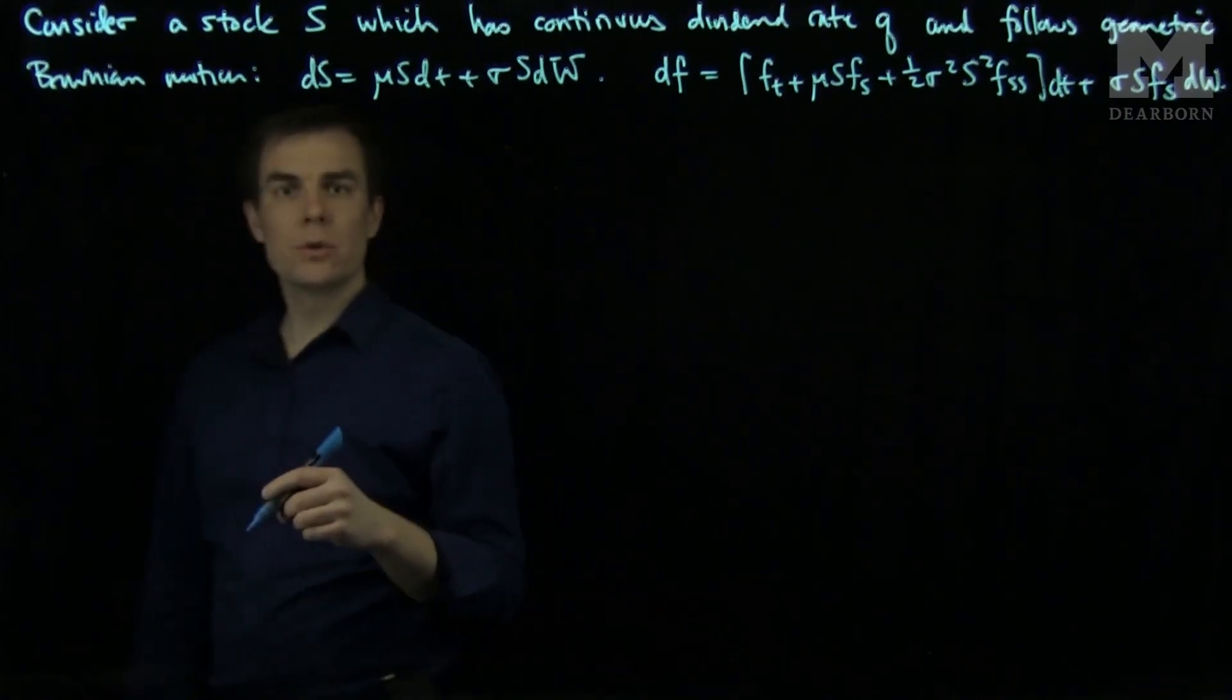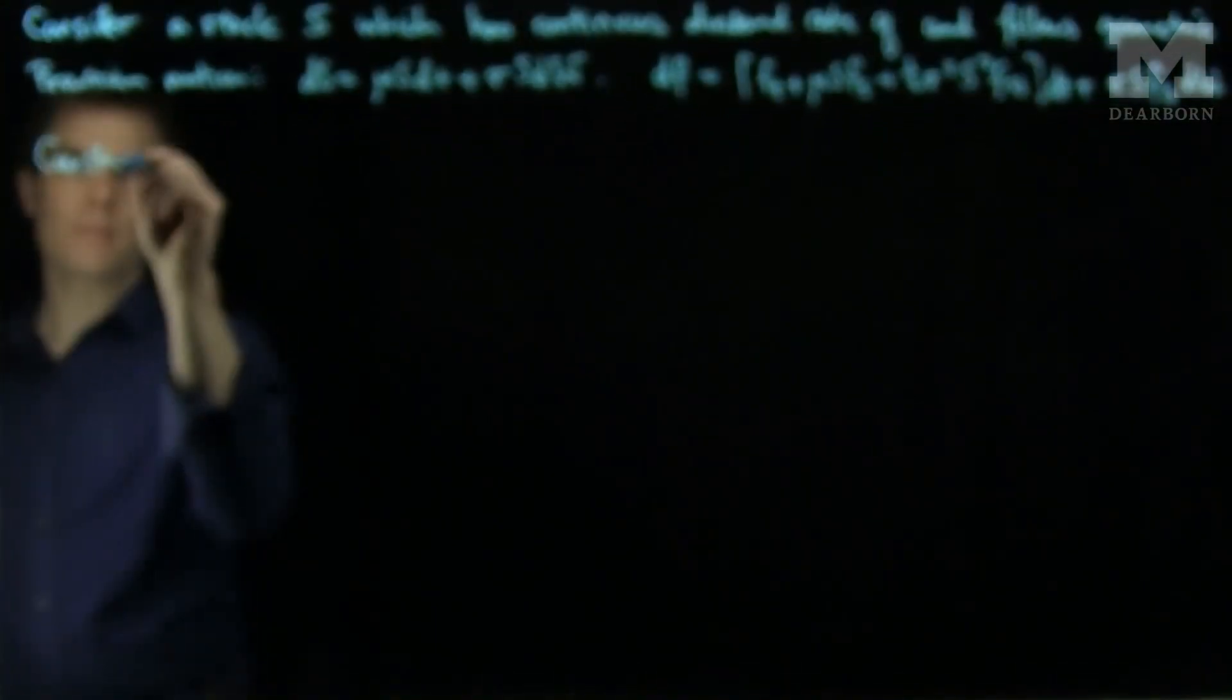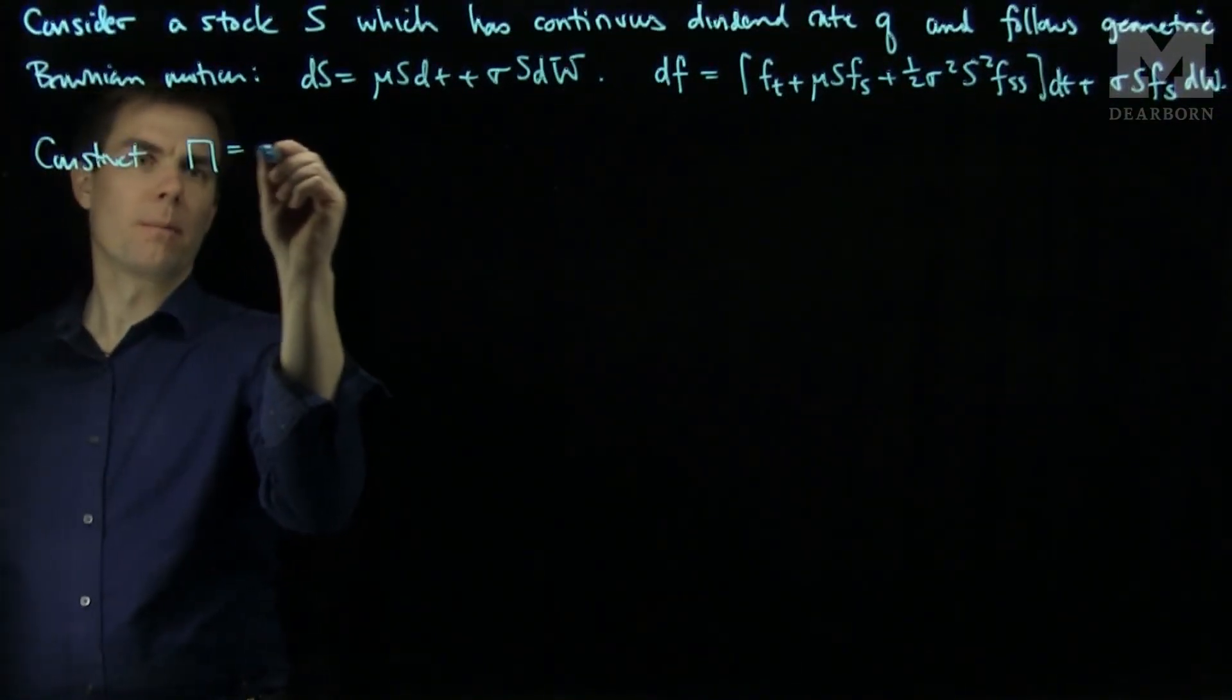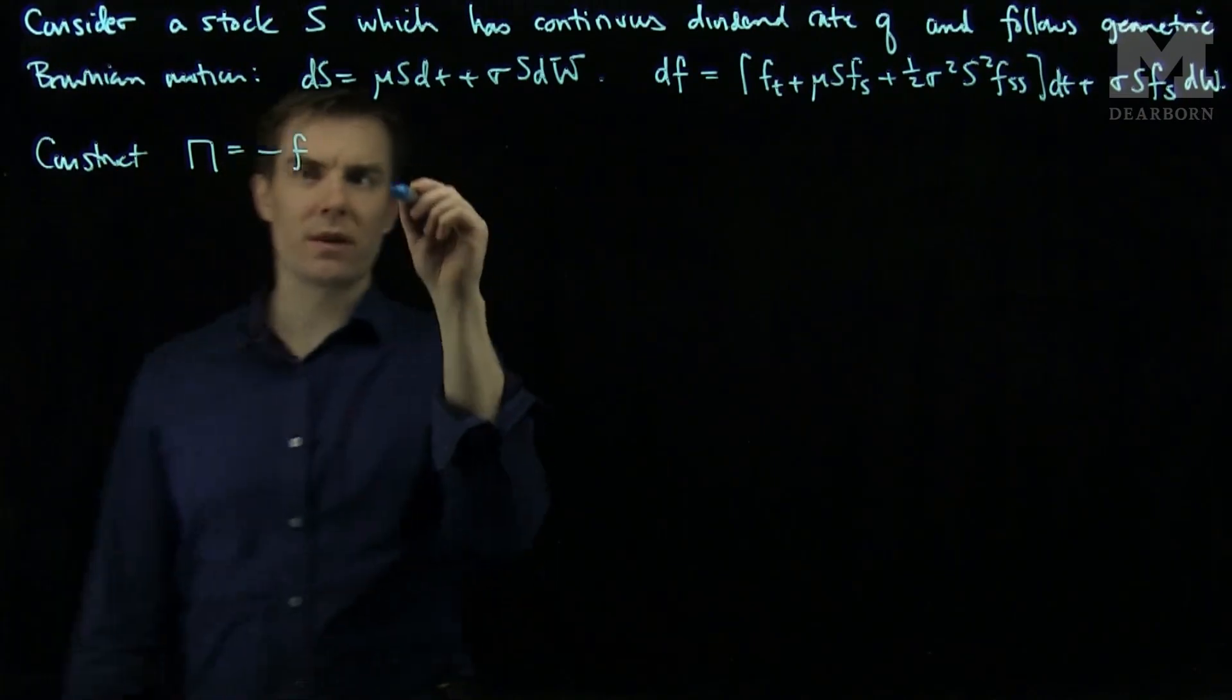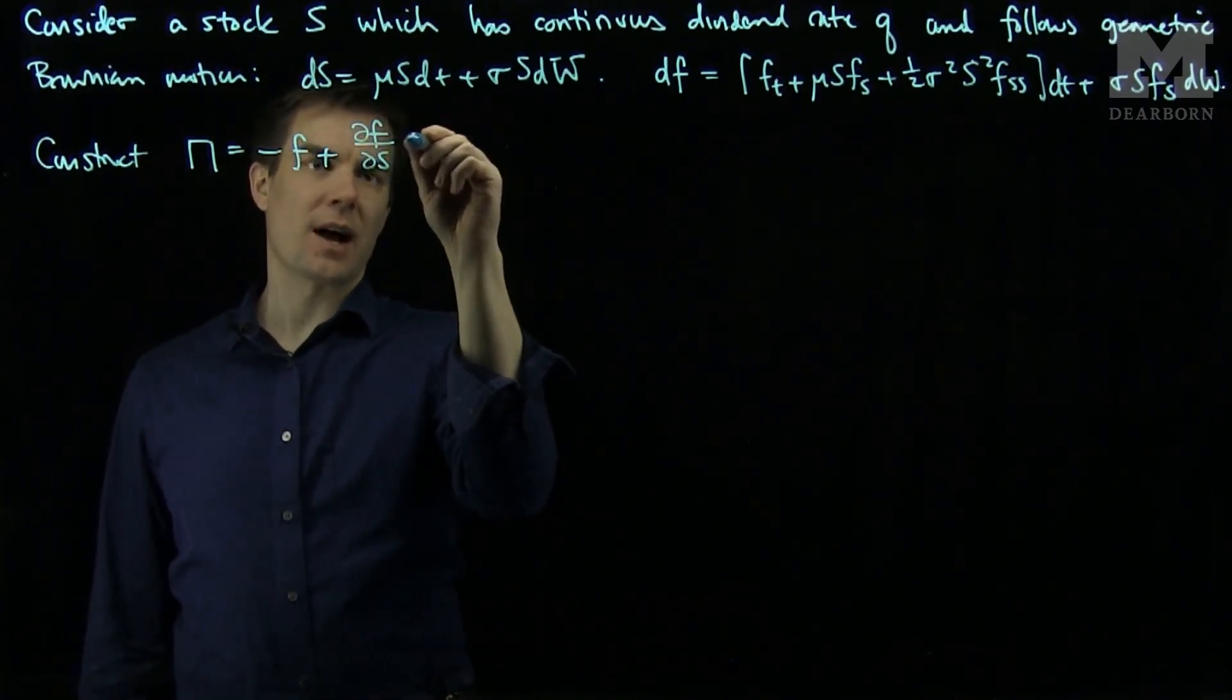And what we'll do is we'll construct the same portfolio as we did with Black-Scholes. We'll construct a portfolio pi by shorting one of the derivatives and taking a long position of partial F partial S in the stock.